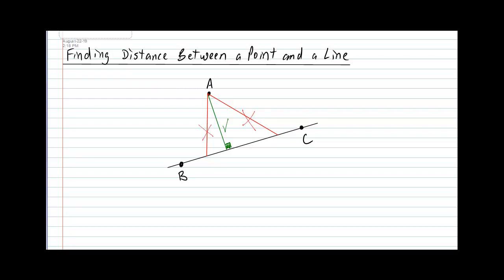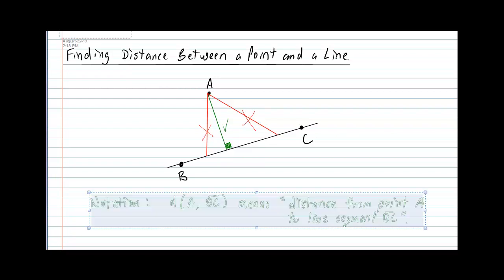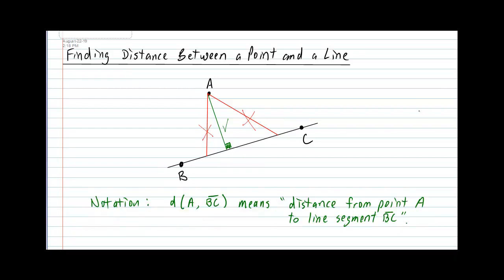One more thing to mention before we take a look at the actual formula is the notation for the distance from a point to a line. It's written as a small letter d, and in brackets, the point first, in this case A, comma, and line segment, in this case BC.